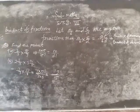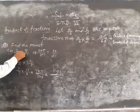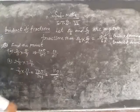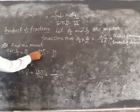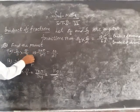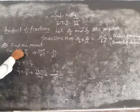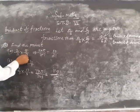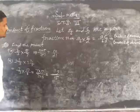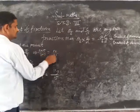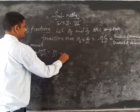Find the product: 2 upon 3 into 5 upon 7. So, 2 into 5 upon 3 into 7. Product of numerators upon product of denominators. 2 times 5 is 10, 3 times 7 is 21. Answer.